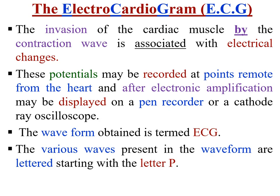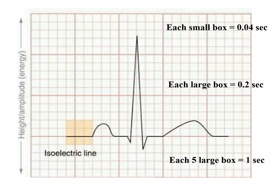As you know, the invasion of the cardiac muscle by the contraction wave is associated with electrical changes. These changes or potentials may be recorded at points removed from the heart, and after electronic amplification may be displayed on a pen recorder or a cathode ray oscilloscope. The waveform obtained is termed ECG. The various waves present in the waveform are lettered starting with the letter P, as you can see in this figure.